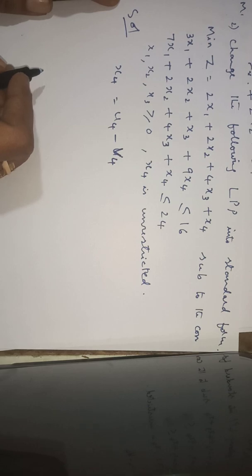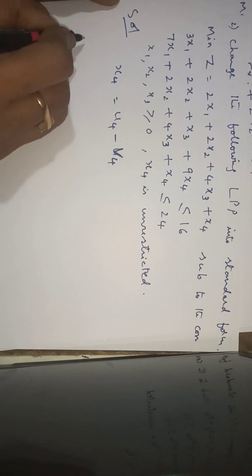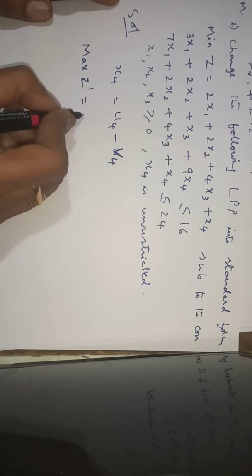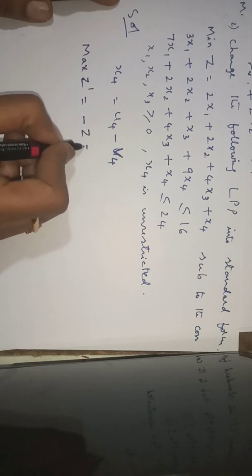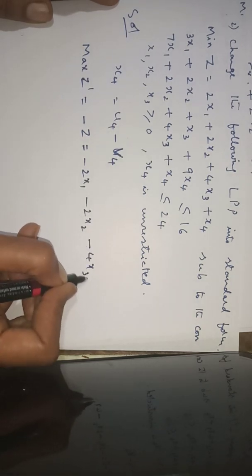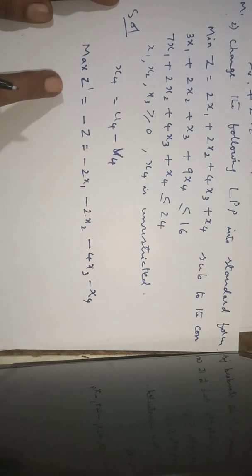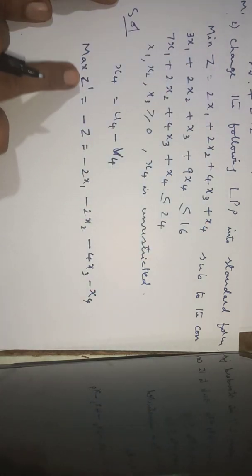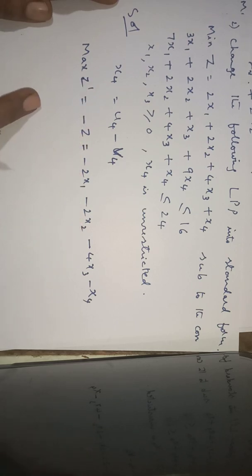Also, since there is a minimization of z, we must convert it to a maximization type. We set max z-dash equal to minus z, which means we multiply both sides by minus 1: max z-dash equals minus 2x1 minus 2x2 minus 4x3 minus x4.